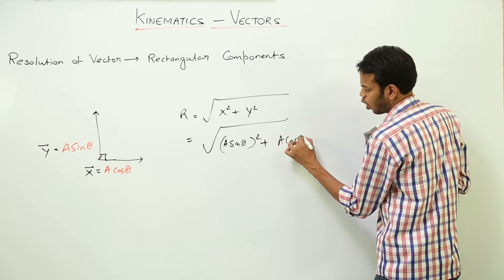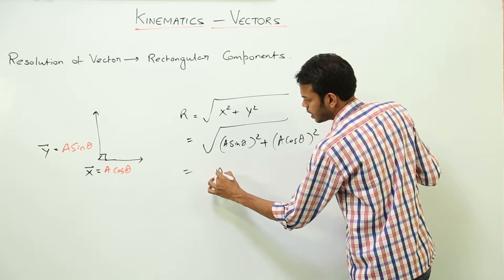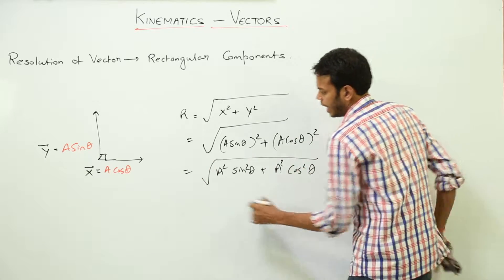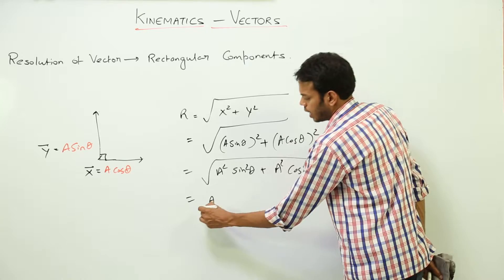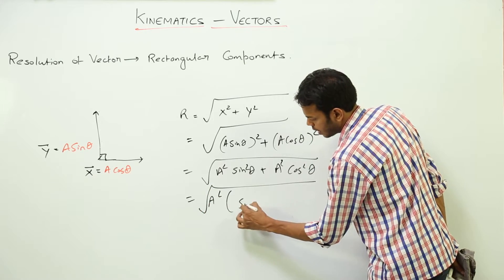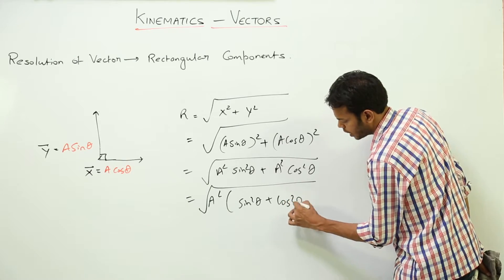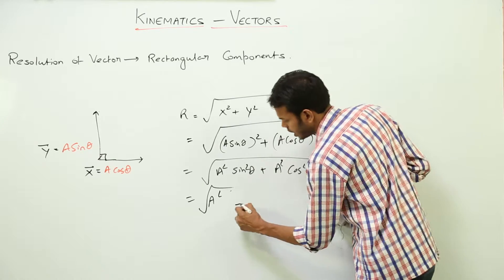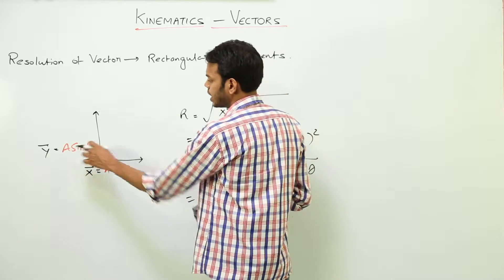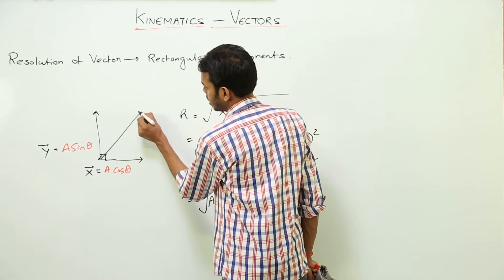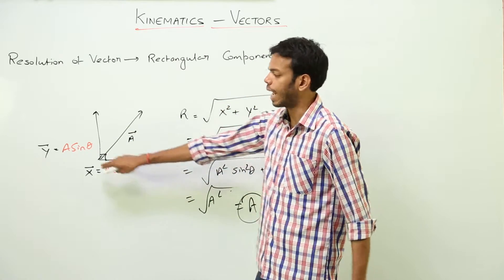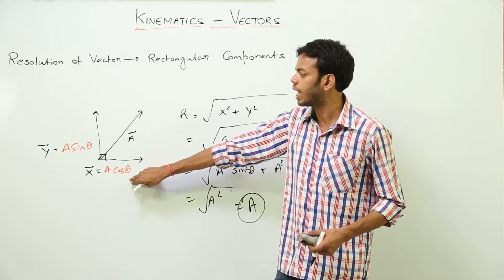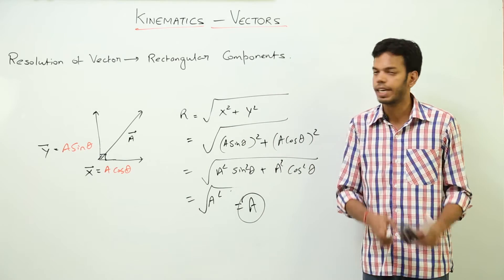X² is (A·sin(theta))² and Y² is (A·cos(theta))², so this becomes the square root of A²·sin²(theta) + A²·cos²(theta). Taking A² common, we get A² times (sin²(theta) + cos²(theta)) under the root. Since sin²(theta) + cos²(theta) = 1, we are left with the square root of A², which is A. So the resultant of these two vectors is back the same vector A. These two are called rectangular components — along the x-axis (horizontal) this is A·cos(theta), and along the y-axis (vertical) this is A·sin(theta). This is how you resolve a vector into rectangular components.